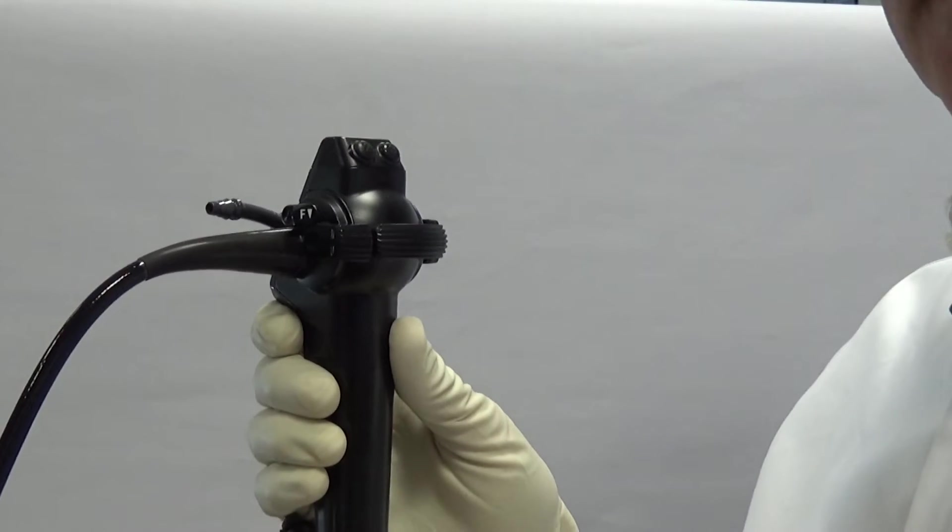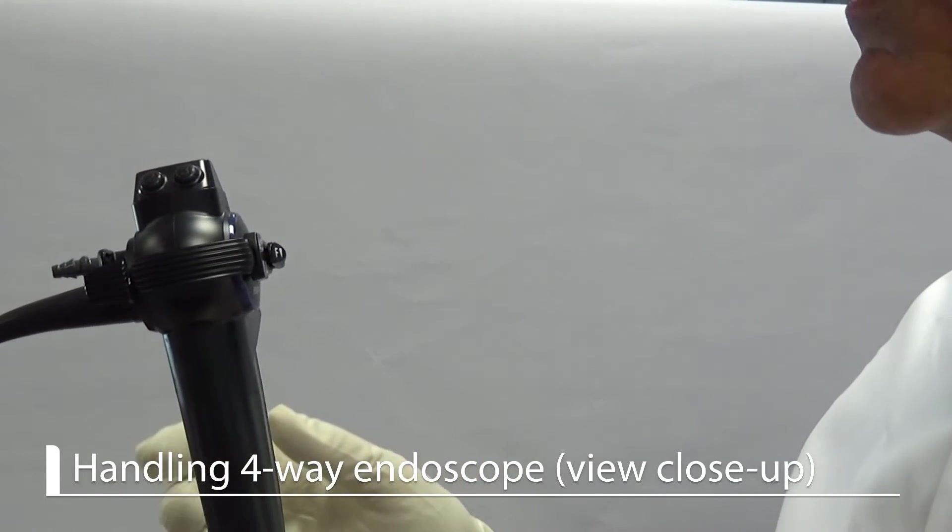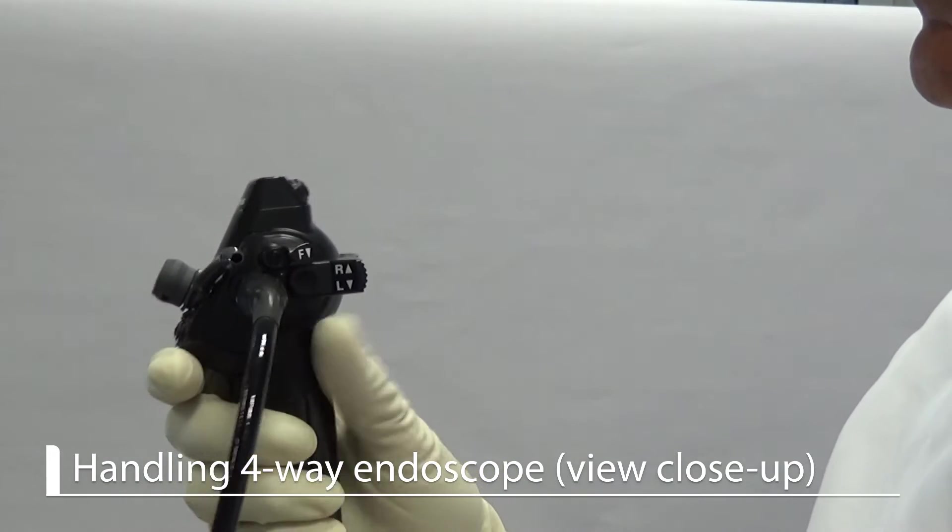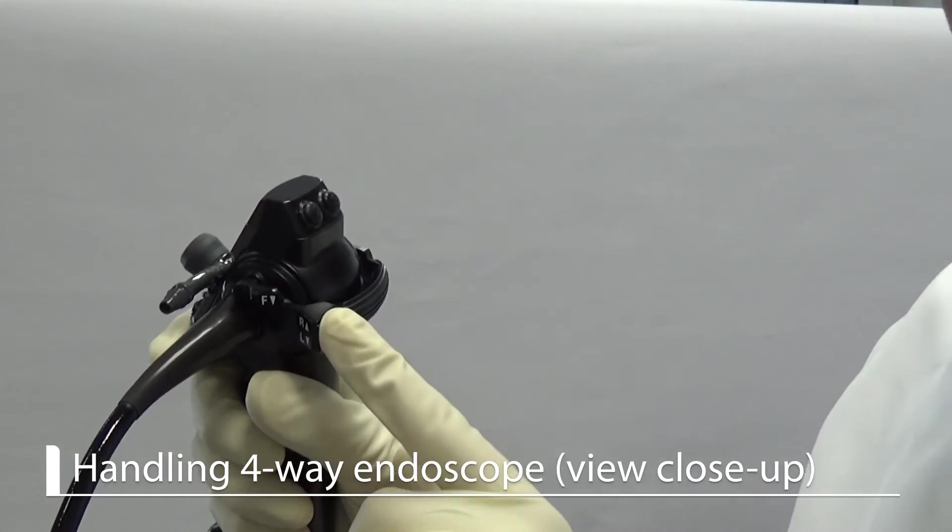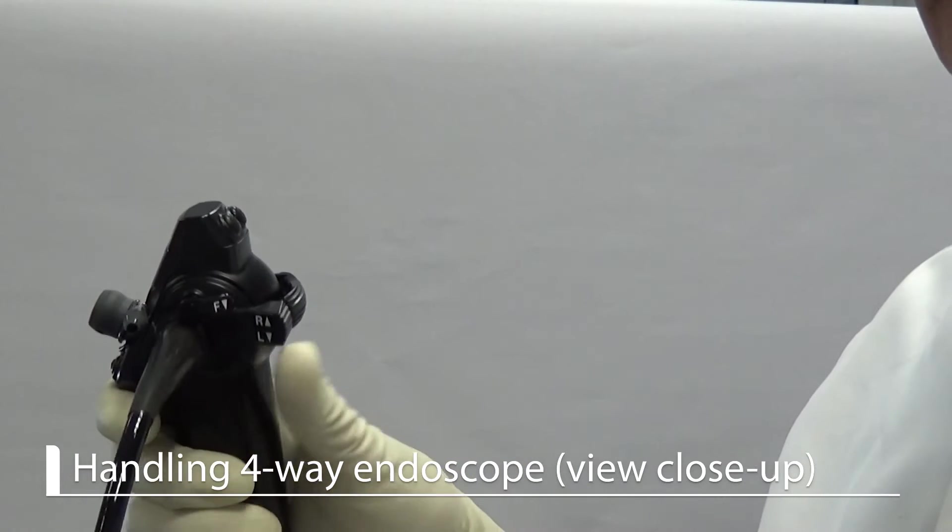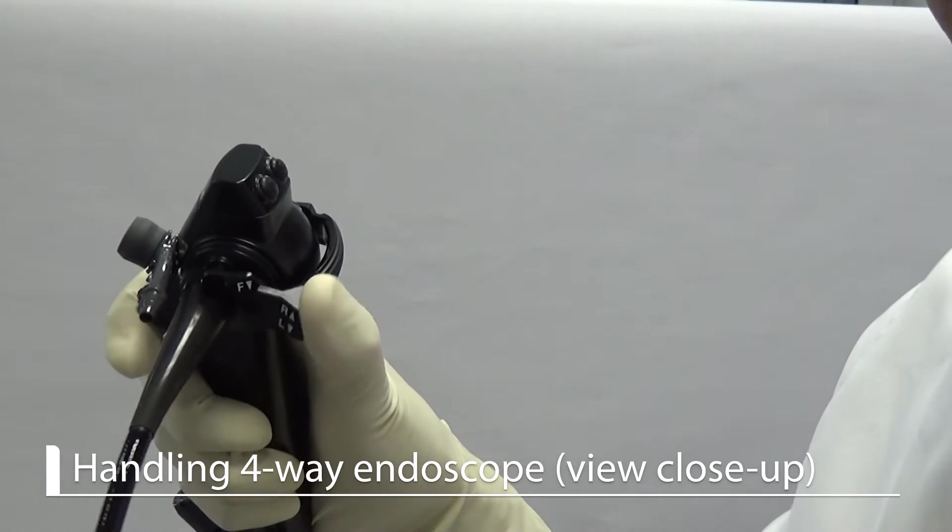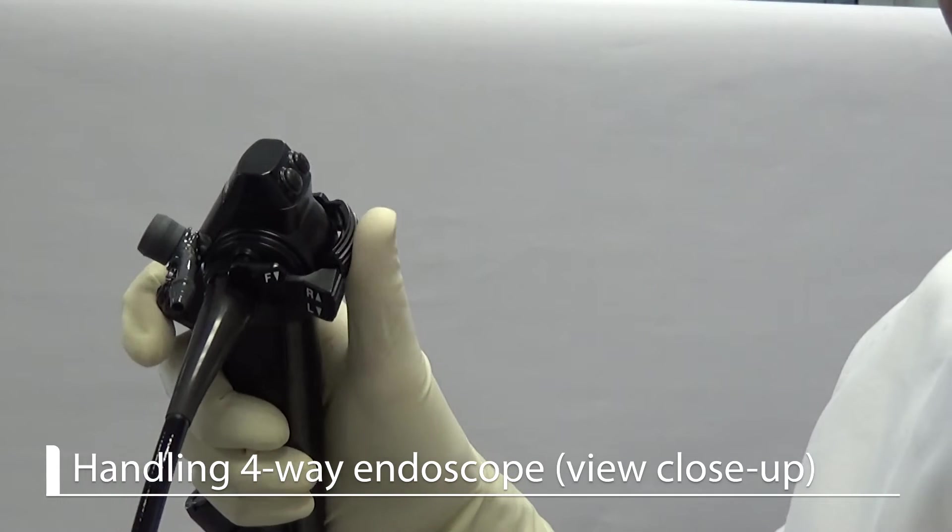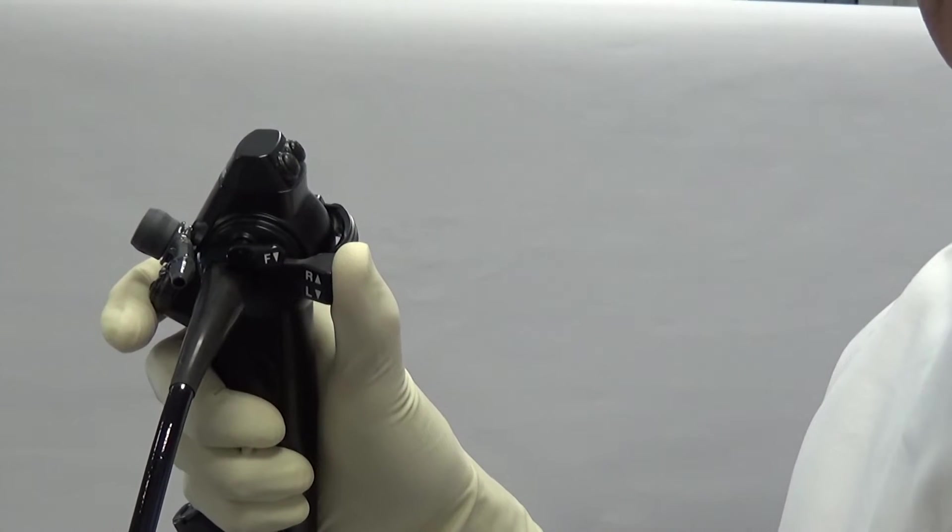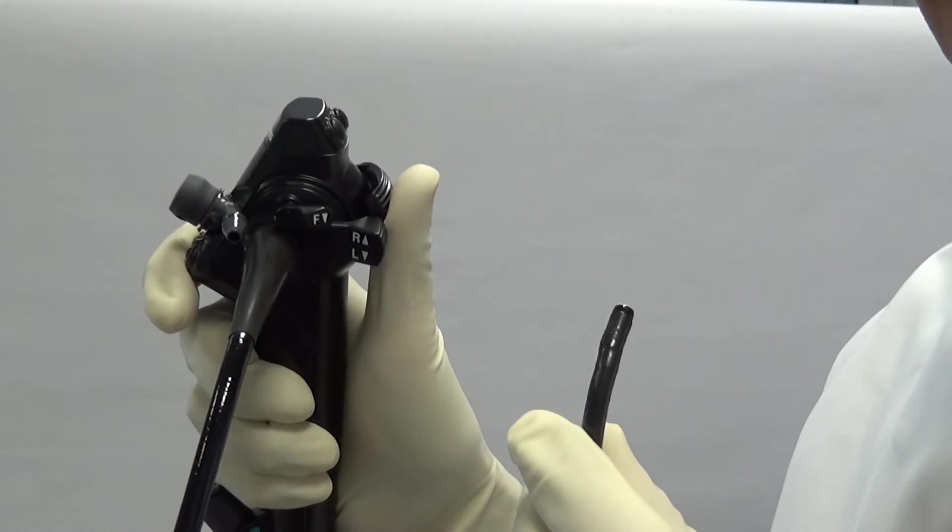There are different ways to hold an endoscope. So first let me show you how the gastroenterologists hold an endoscope. Here you have two levers, one and two, and they are handled with a thumb as you can see here. If you want a special position, so let me show you the tip of the endoscope like this or like that.